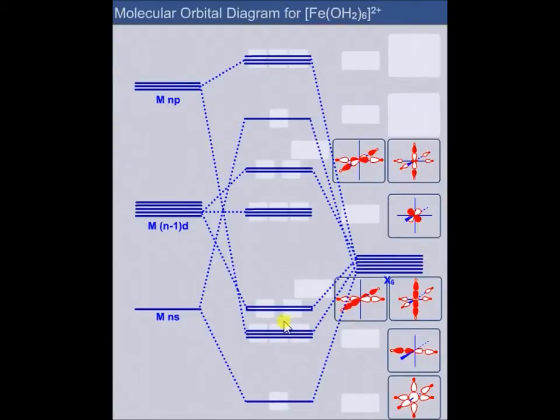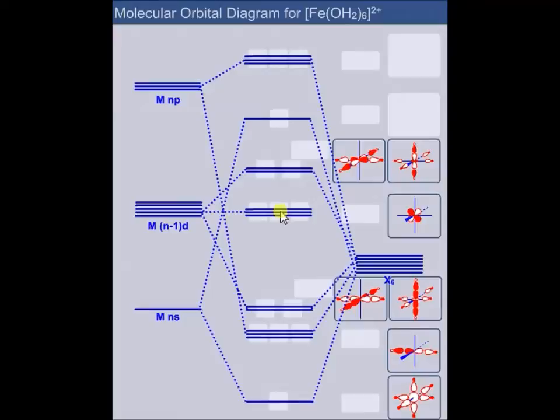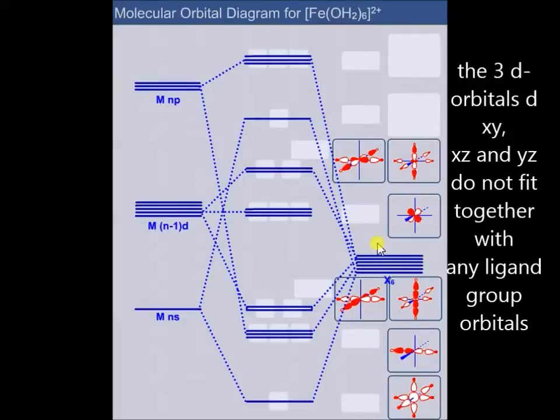Now the interesting part starts here, interaction with the metal d orbitals. We can combine two group orbitals together with x² - y² here and another with the z² orbital. The remaining 3d orbitals that look like this, they have their lobes between the axes and have no partner on the ligand side, so they remain non-bonding.